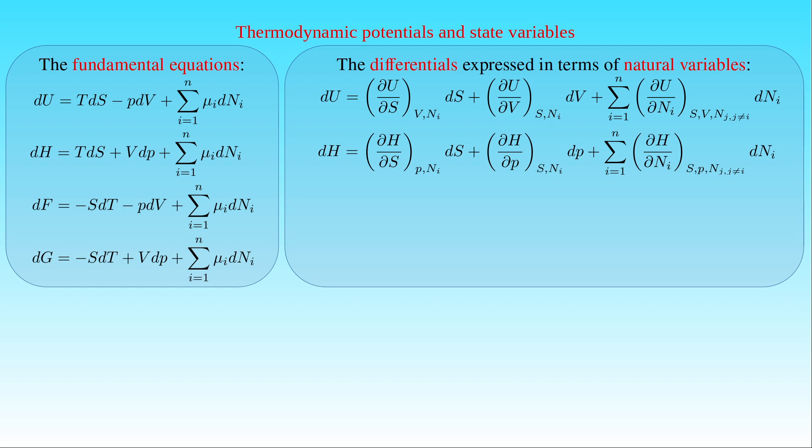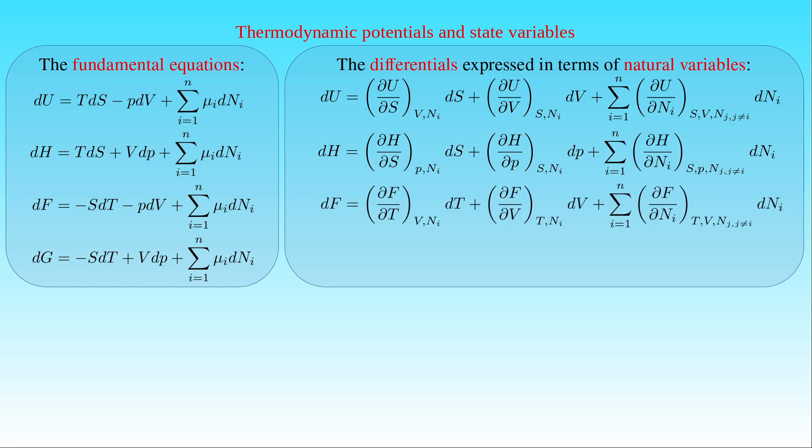The third fundamental equation shows that the natural variables of the free energy F are the temperature T, the volume V, and the number of particles Nᵢ. The differential of the free energy F is equal to the partial derivative of F with respect to T at constant V and Nᵢ times dT, plus the partial derivative of F with respect to V at constant T and Nᵢ times dV, plus the sum of the partial derivative of F with respect to Nᵢ at constant T, V, and Nⱼ where j ≠ i, times dNᵢ.